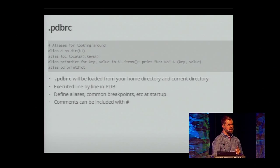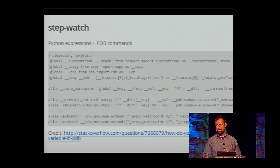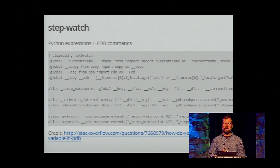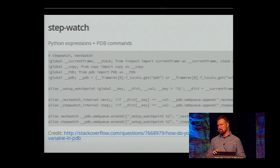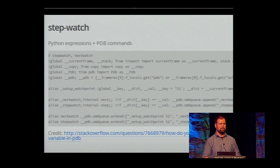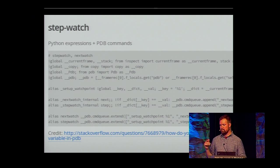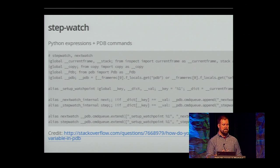This is pretty powerful. Here's an example somebody smarter than me figured out — how to implement StepWatch and NextWatch. What this does is add two commands to PDB that basically say: continue execution until this variable I'm watching changes. The really interesting thing here is the cmdqueue, because this is basically pushing more commands into the queue as part of executing an alias.